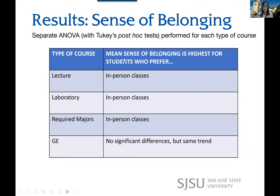Looking at sense of belonging: using the seven sense of belonging questions, I did reverse coding and calculated an overall sense of belonging score for each student, then compared the mean sense of belonging across the various modalities for each type of course. The sense of belonging was actually highest for in-person classes for lecture, lab, and required majors classes. For GE classes, there were no statistically significant differences based on ANOVA, but it trended toward higher sense of belonging for in-person GE classes compared to other modalities. That's an interesting finding given the preference for online in GE.